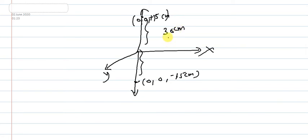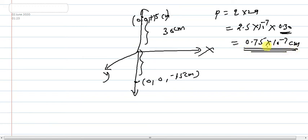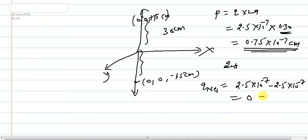The dipole moment is calculated using P = q × 2a. The charge q = 2.5 × 10⁻⁷ coulomb and 2a = 30 cm = 0.30 meter. So P = 2.5 × 10⁻⁷ × 0.30 = 7.5 × 10⁻⁸ coulomb meter. For the total charge: since charge is a scalar, q_net = 2.5 × 10⁻⁷ + (-2.5 × 10⁻⁷) = 0 coulomb.